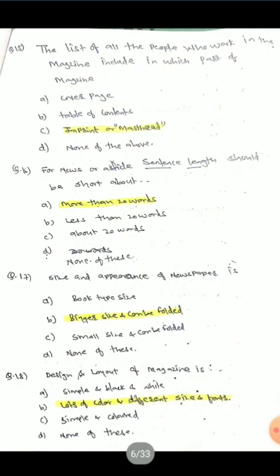Question 17: Size and appearance of newspaper — what is the difference between newspaper and magazine? Options are: book type size, bigger size and can be folded, small size and can be folded, none of these. The correct answer is bigger size and can be folded — newspapers can be folded.